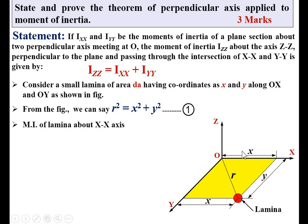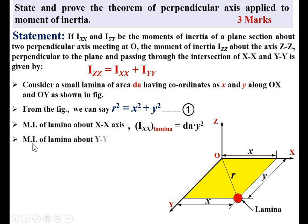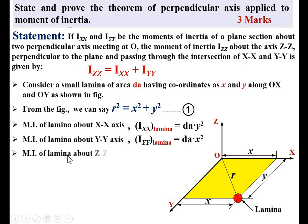The moment of inertia of the lamina about the XX axis: moment of inertia equals area times distance squared, so I_XX = dA × y². Similarly, the moment of inertia of the lamina about the YY axis: I_YY = dA × x². Similarly, the moment of inertia of the lamina about the ZZ axis: I_ZZ = dA × r².